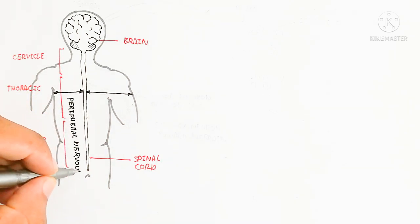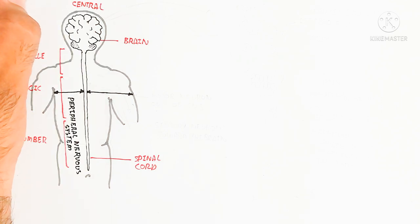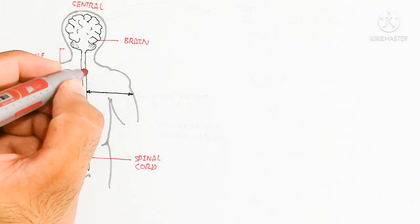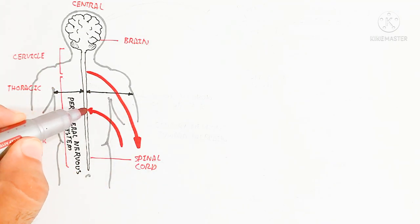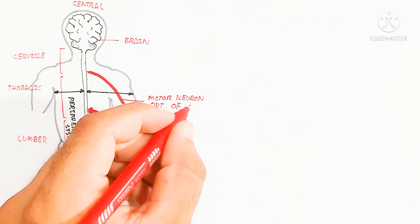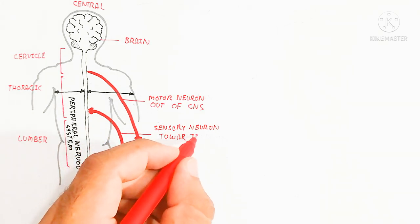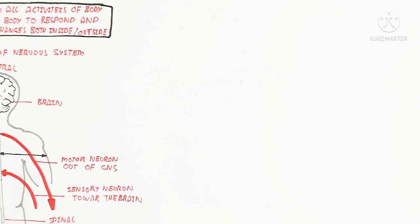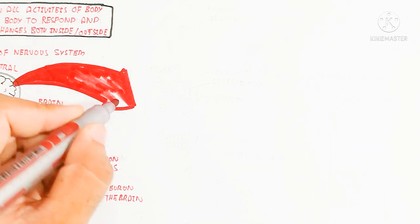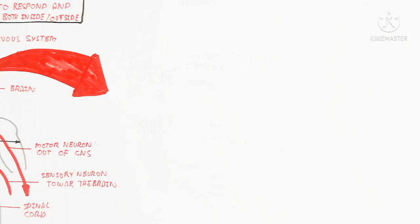The peripheral nervous system consists of everything except the brain and spinal cord. It extends through the body — the hands, legs, upper and lower parts. The peripheral nervous system contains motor neurons and sensory neurons. Motor neurons go out of the central nervous system and attach to muscles, while sensory neurons carry information toward the brain for integration. Interneurons are unmyelinated and present in the brain as well as the spinal cord.